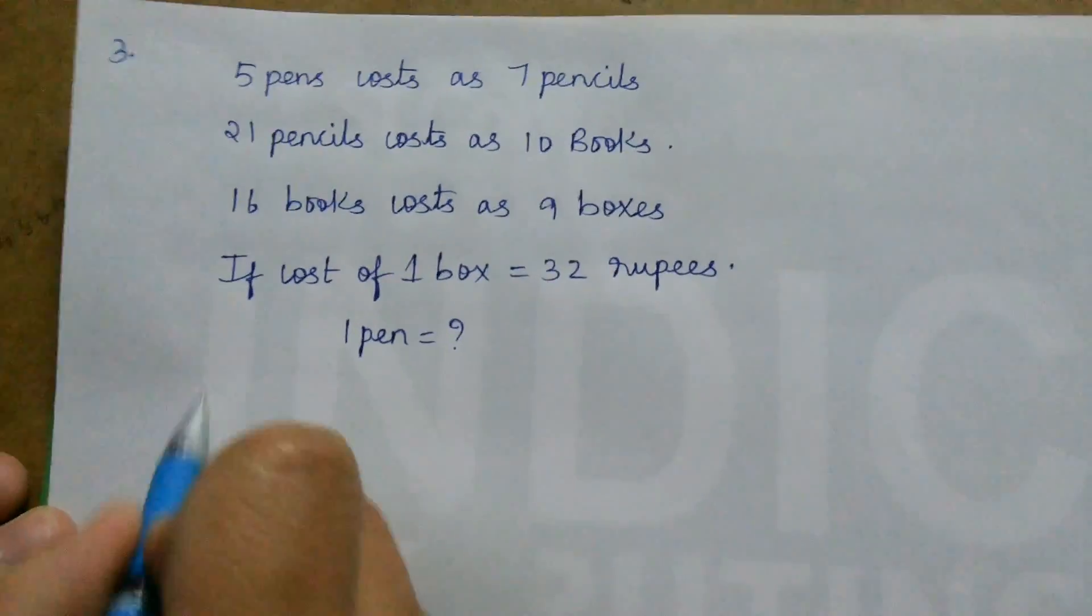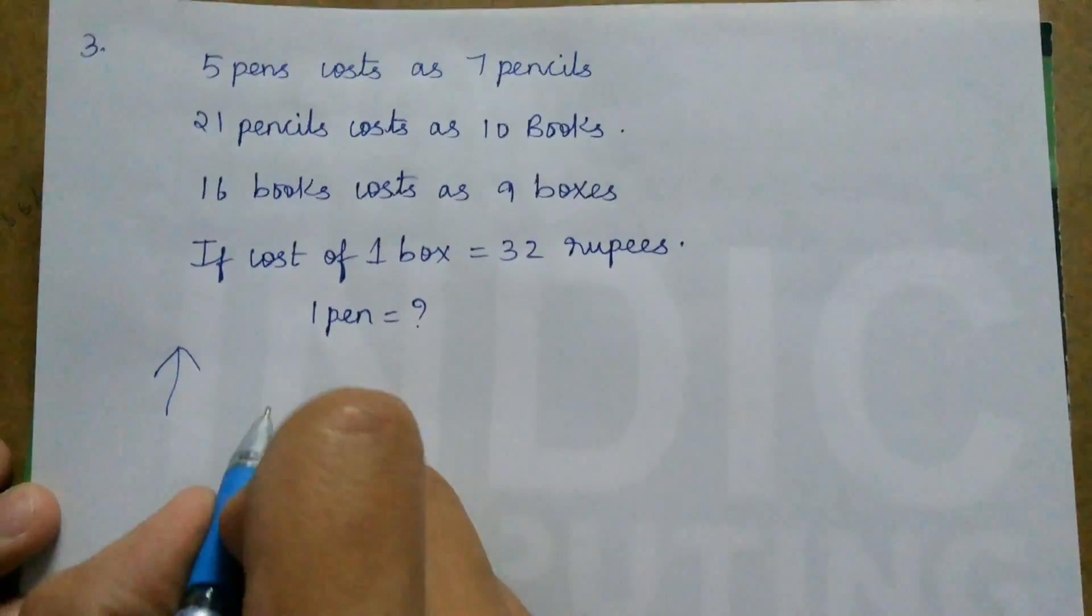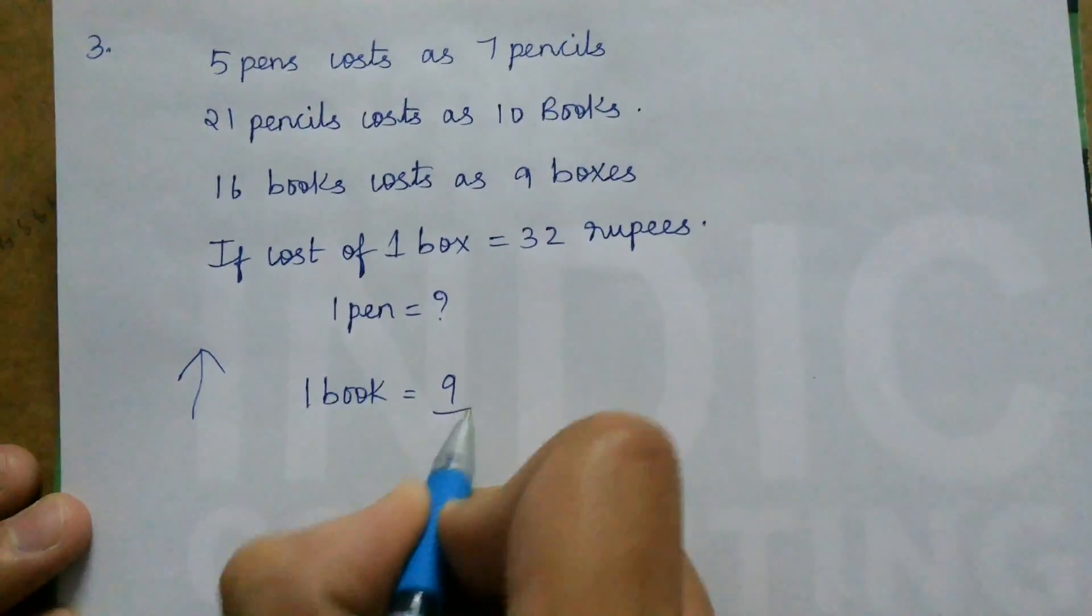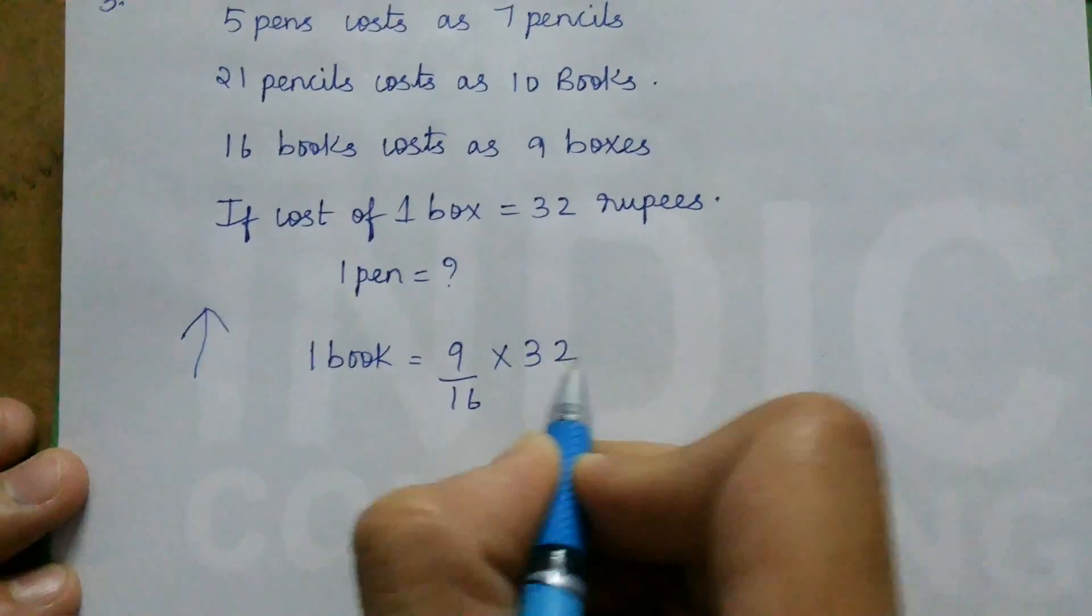So for this we use the bottom up approach, that is 16 books. We find the cost of 1 book. 1 book is equal to 9 by 16 times of boxes, that is 9 by 16 into 32.